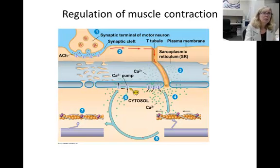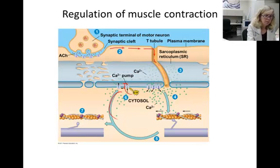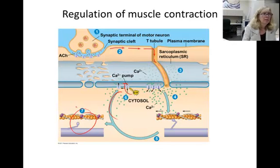In step six, calcium is pumped immediately back into the sarcoplasmic reticulum by a calcium pump. When the calcium is gone from the cytosol, the myosin can no longer bind to the actin molecules. In step seven, the muscle returns to its lengthened state.